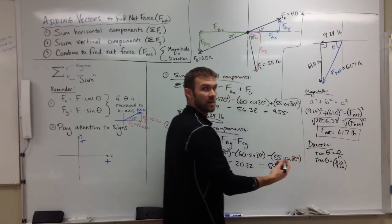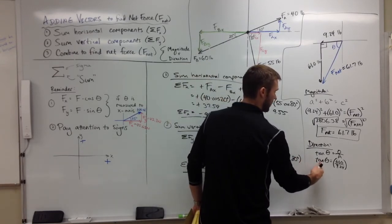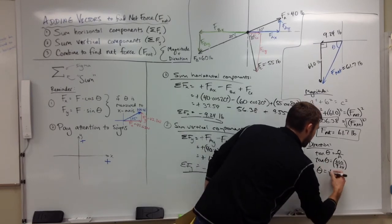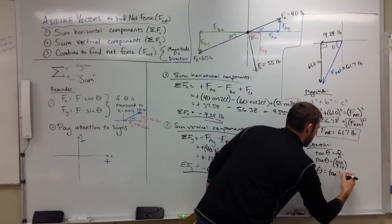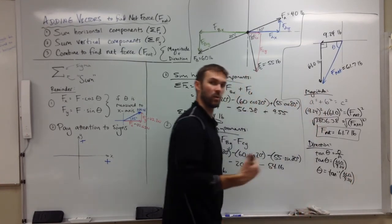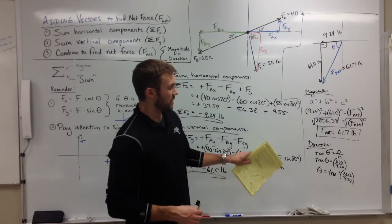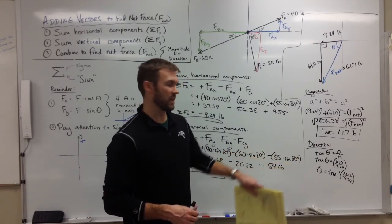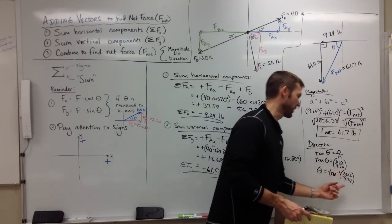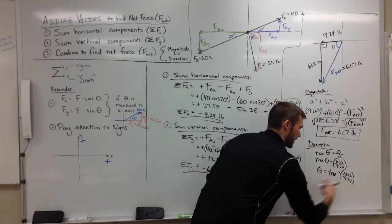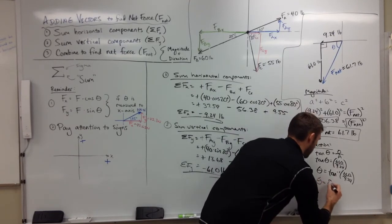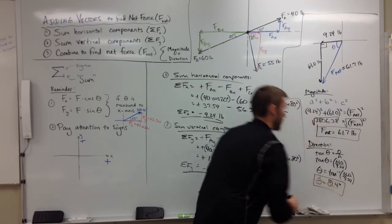Now to solve for theta, I have to get rid of this tangent. How am I going to do that? I'm using inverse trig function, so inverse tangent of tangent of theta gives me theta. Inverse tangent of this side - again, if that's confusing, go back and watch the trig video. Theta is the inverse tangent of 61 over 9.24. In other words, theta is the angle whose tangent is 61 over 9.24. Go ahead and plug in your calculator, see what you get. You get an angle of 81.4 degrees.